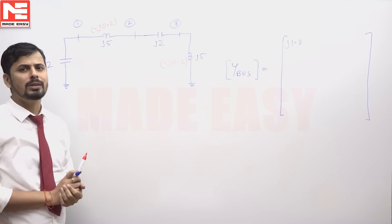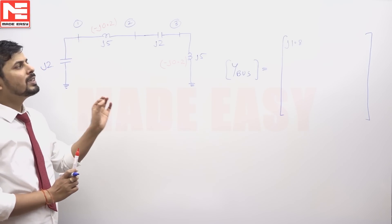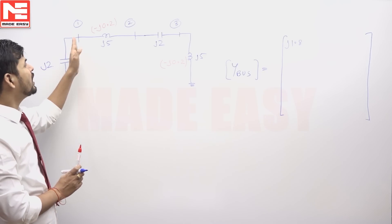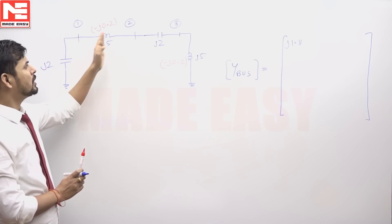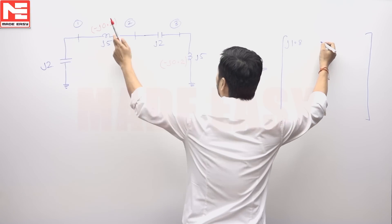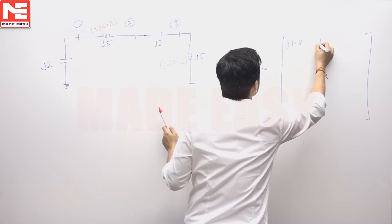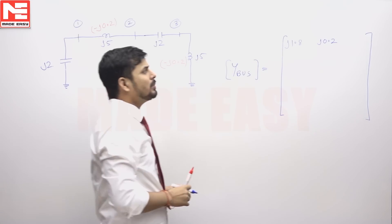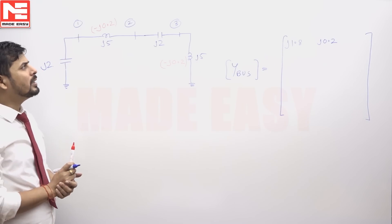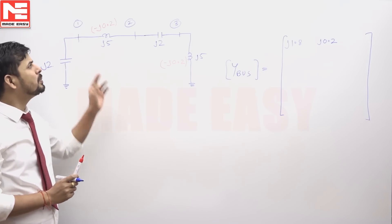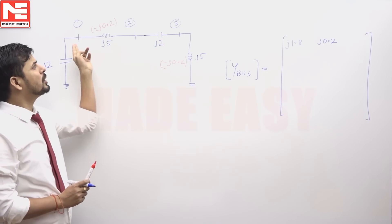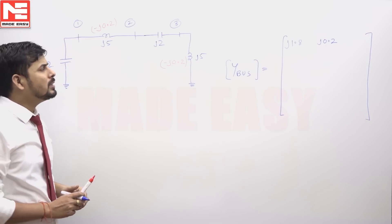The first row, second column entry y12 will be the negative of the admittance connected between bus number 1 and bus number 2, which will be j0.2. Similarly, y13, the first row third column entry, is the negative of the admittance between bus number 1 and 3. Since there is no branch directly connected between bus number 1 and 3, the admittance is 0, so the entry will be 0.